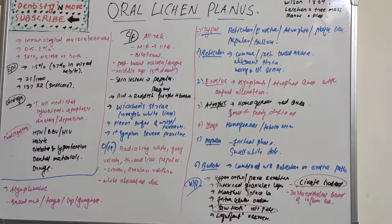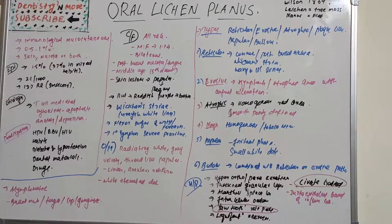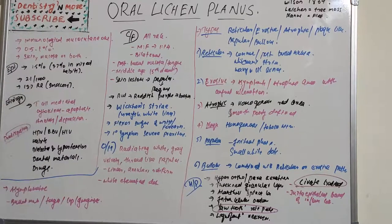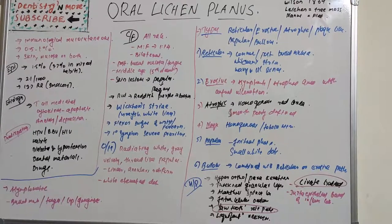Regarding epidemiology, it affects around 1.5% of the population. The highest prevalence is 3.7% in people with mixed oral habits, and the lowest is 0.3% in non-users of tobacco. The annual age-adjusted incidence rate is 2.1 to 2.5 per thousand. The relative risk among smokers is 13.7 times greater than non-smokers, making smoking a major predisposing factor.